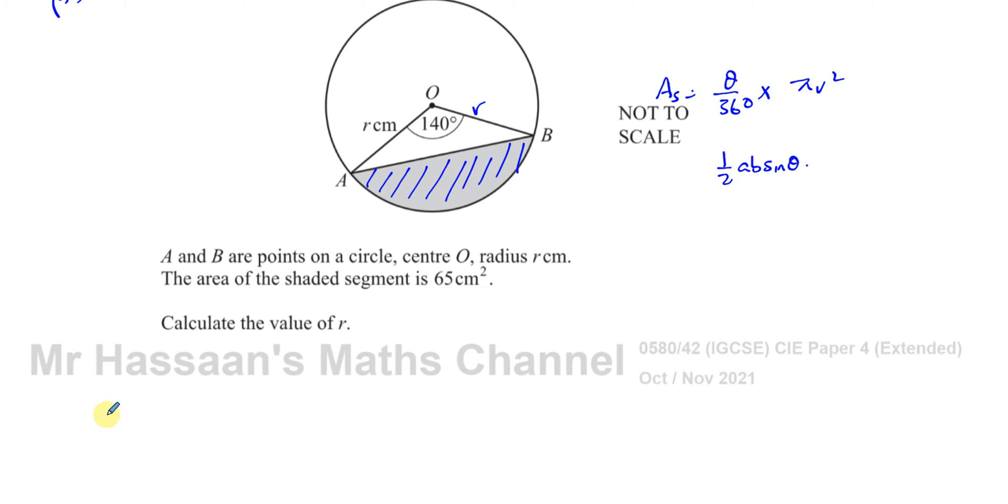Let's apply that to this question. I know that the area of the sector, which is 140 over 360 times pi times r squared, minus the area of this triangle, which is a half times r times r, which is r squared, times the sine of the angle between them, which is 140, is equal to 65. That's equal to the area of this shaded segment.